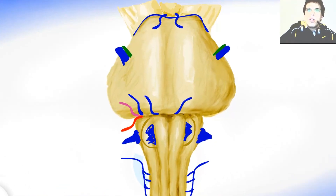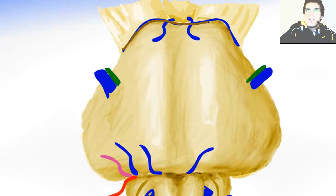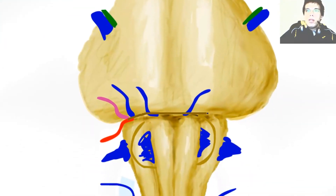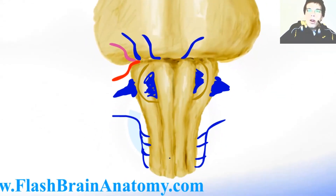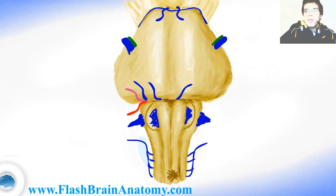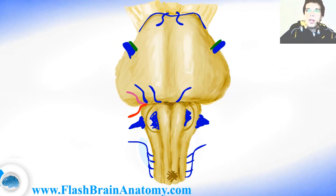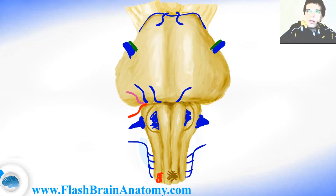Let's remember the borders. This is the border between the mesencephalon and the pons. This was the border between the pons and the medulla oblongata. And down caudally, we find the decussatio pyramidum — the place where the pyramids exchange almost 80% of the fibers. That place is the border between the medulla oblongata and the spinal cord. It is important to know that close to the decussatio pyramidum, the first spinal nerve leaves the spinal cord from the anterolateral sulcus, just like the hypoglossal nerve.